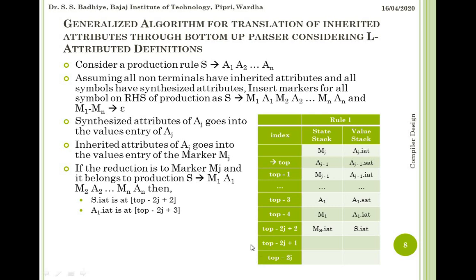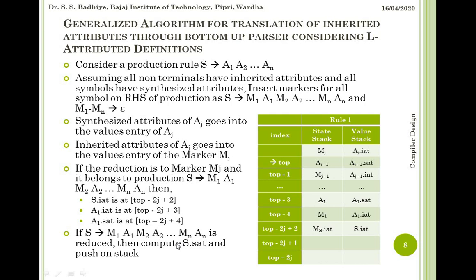From the stack layout, the inherited attribute of M1 is at top minus 2j plus 2, and the inherited attribute of A1 is at top minus 2j plus 3, while the synthesized attribute of A1 is at top minus 2j plus 4. In this way, the locations where inherited or synthesized attributes of any variable are present can be determined. When S derives to M1 A1 M2 A2 ... Mn An is reduced, we compute the synthesized attribute of S and push it onto the stack.